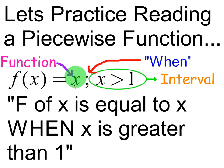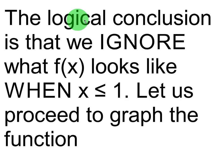Notice it doesn't say anything about f of x equals whenever it's less than 1 or equal to 1. So there won't be a graph there whenever x is less than 1 or equal to 1. There's only going to be a graph whenever x is bigger than 1. That's why we call it the interval. The logical conclusion is that we ignore what f of x looks like whenever x is less than or equal to 1.